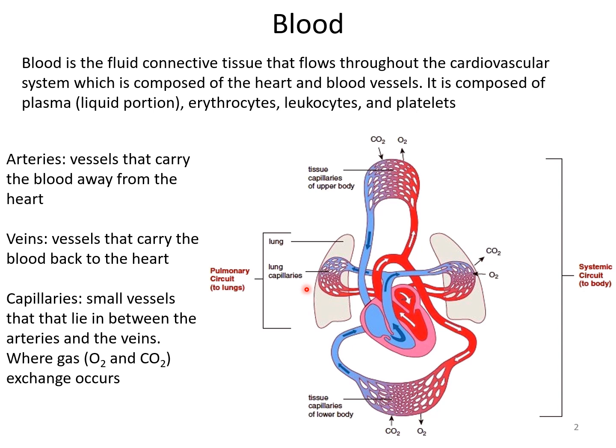We have three types of vessels: arteries, veins, and capillaries. Arteries carry blood away from the heart. Veins carry blood back towards the heart. Capillaries are the small vessels that lie between the arteries and veins, and they are important because this is where gas exchange happens — releasing oxygen from the blood to the tissues and picking up carbon dioxide. Our cells and tissues need oxygen for all of their metabolic activities, and they produce waste products such as carbon dioxide that must be removed.